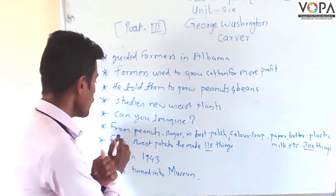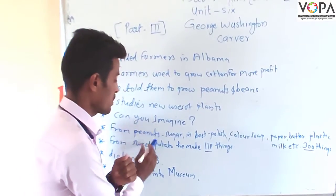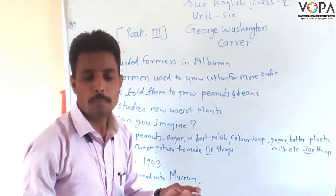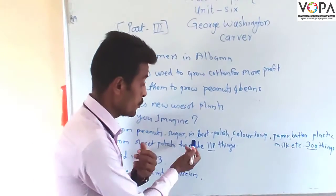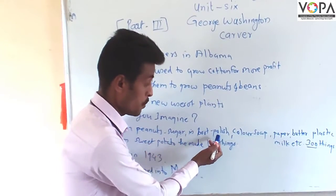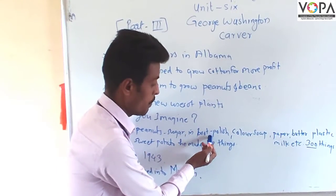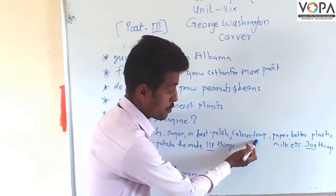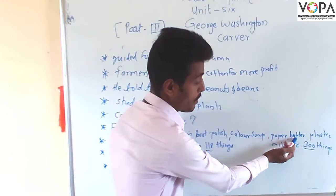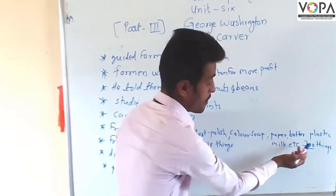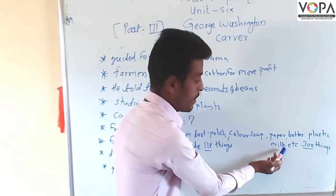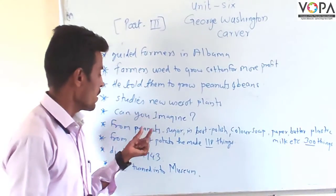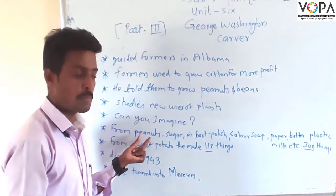Third, from the source, we have a lot of sugar, food polish, color, soap, paper, butter, plastic, milk, etc. From now on, the second half will lose half of the water.